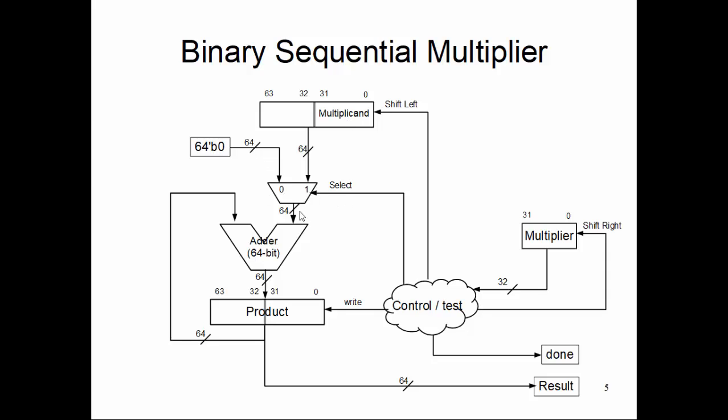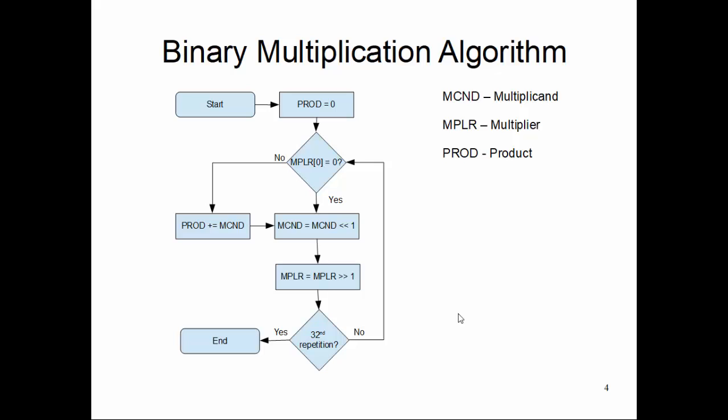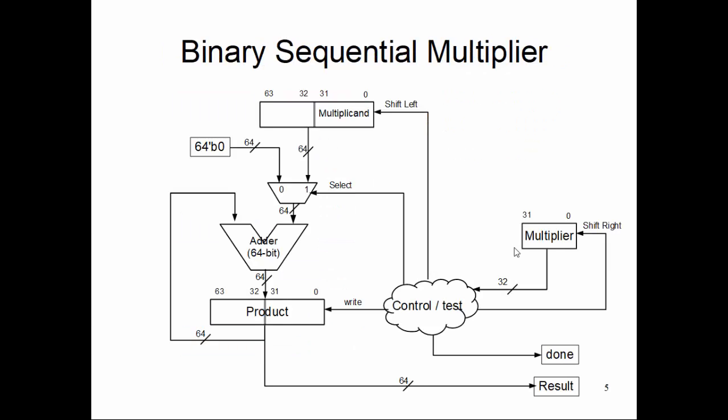The selection bit, whether I want to select the multiplicand 64-bit or select the zero, comes from something like a controller. This controller digital circuit, the control and test, is the one who actually runs the algorithm from the previous page. If it is a simple enough algorithm, we can actually put it on the hardware - a digital controller can actually test the LSB, do the shifting control, and such.